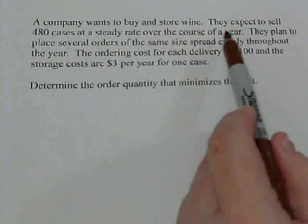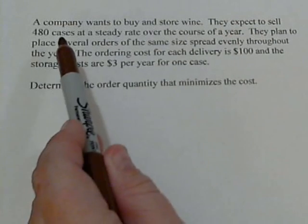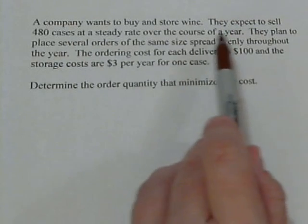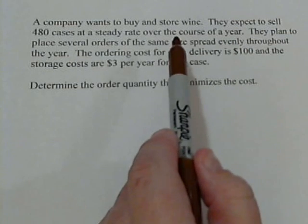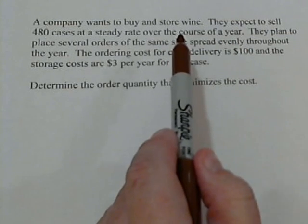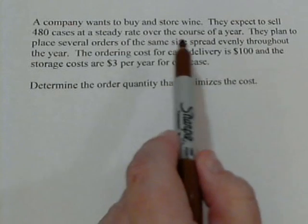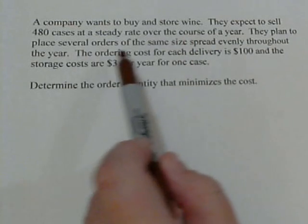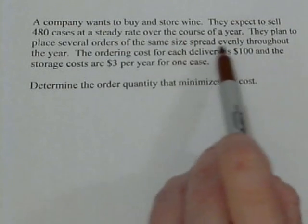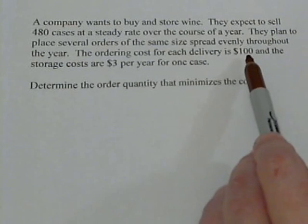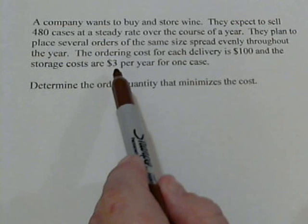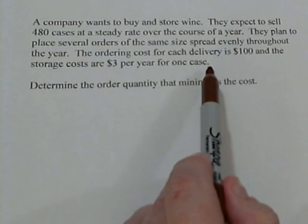They want to sell 480 cases over the course of the year, and we assume at a steady rate. In reality, there may be some busy seasons compared to others, but we'll assume it's roughly a steady rate. They want to place several orders of the same size spread out throughout the year. The delivery cost is $100, and the storage costs are $3 per year for one case of wine.